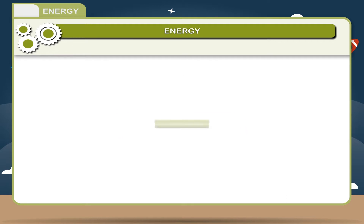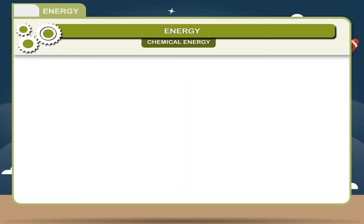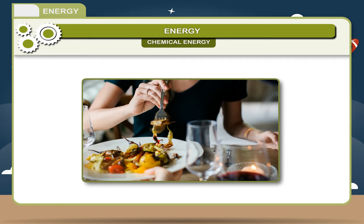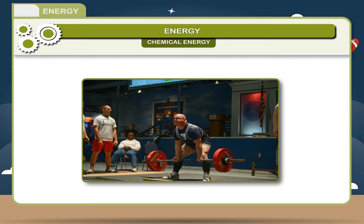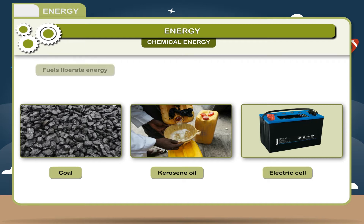Chemical energy. The energy stored in matter and available for work through chemical processes is called chemical energy. The food we eat breaks into small particles during digestion and the chemical energy is released, which we use in performing various activities. Coal, kerosene oil, and electric cells have chemical energy stored in them. Fuels liberate energy when they are burned, and this energy is utilized to drive vehicles and in machinery.